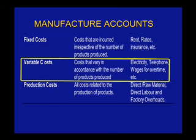Variable costs are those costs that vary in accordance with the number of products produced. The amount of electricity you use is a variable cost — very simple. If you produce more products, you're going to use more electricity.